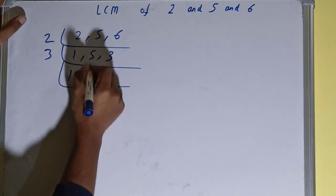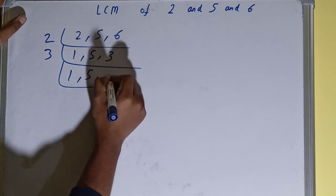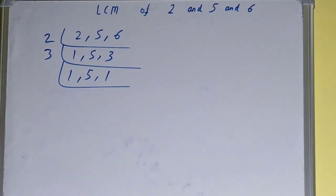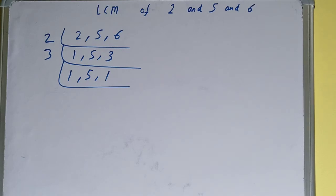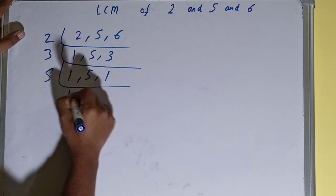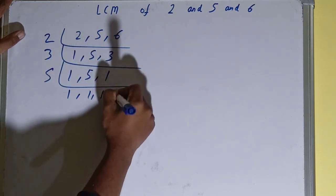Again check, is any of the numbers divisible by 3? None of the numbers, so we'll go to the next lowest one, that is 5. And this is divisible by 5, so divide it. We'll be getting 1, 1, 1. Once we get all 1s, we need to stop.